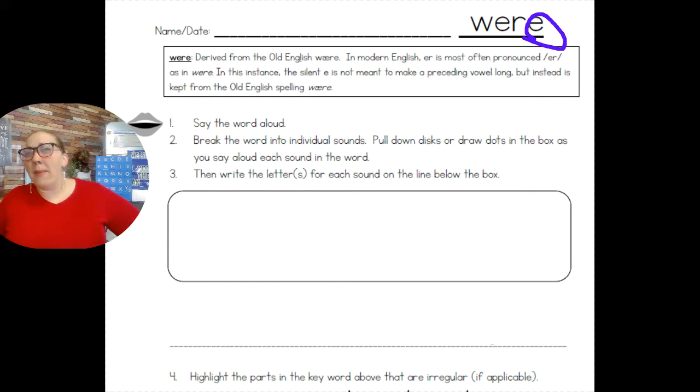...the silent e is not meant to make the preceding vowel say its name. It's not making it go long. But instead, it is kept spelled this way because of the Old English spelling: were.